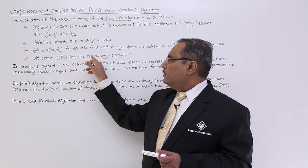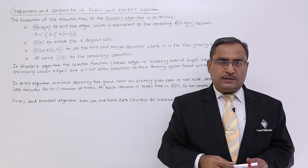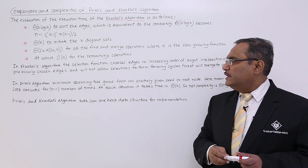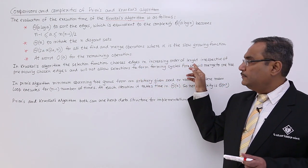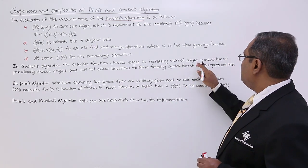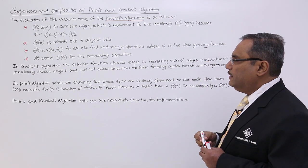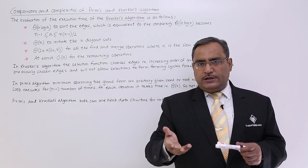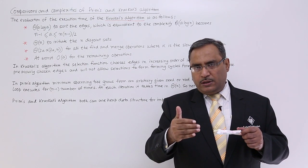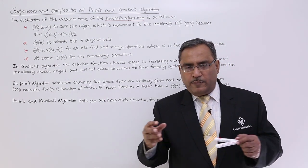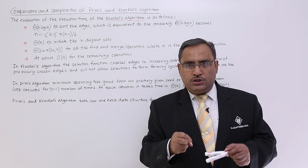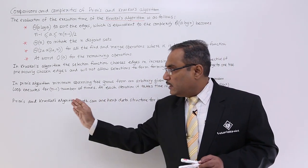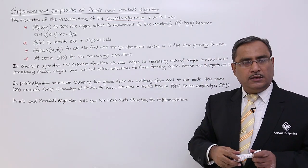In Kruskal's algorithm, the selection function chooses edges in increasing order of length, irrespective of previously chosen edges, and will not allow selections that form cycles. So if you block the execution of Kruskal's algorithm in between, you will be getting many disjoint trees forming a forest, and at the end of the algorithm all these trees will get connected, giving you a single minimum spanning tree — the forest will merge to one tree.